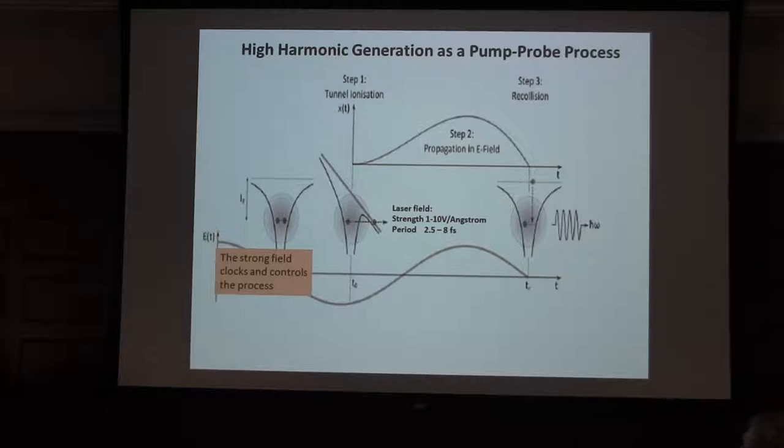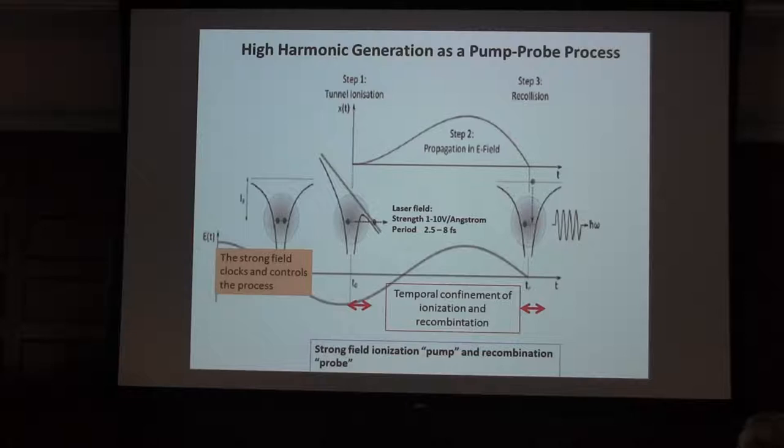We create the hole at this moment, we probe the hole at this moment, so this is, in effect, a pump probe measurement of the evolution of the hole in the system. We've got high temporal confinement of the ionization and the recombination events, and we also have an ability to change the delay between them by looking at different sets of harmonic orders. We know that there's this chirp mapping that we can exploit. So that's the idea, and it's been applied in a number of experiments over the years.